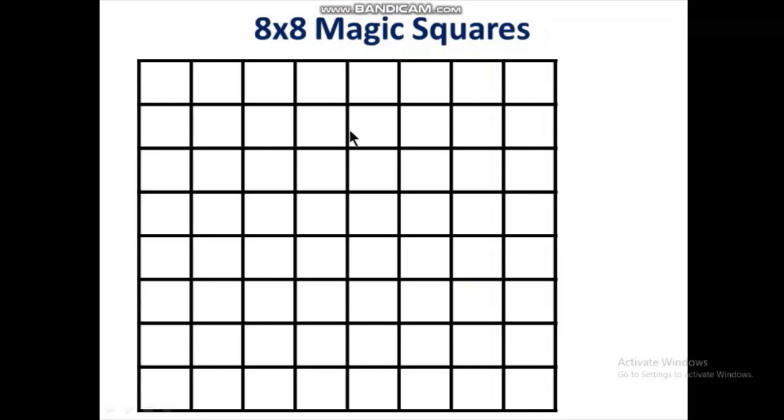For example, by adding all these boxes we have to get 260, and again adding all these boxes we have to get 260. In this way diagonals also, and the same magic constant should satisfy each and every column.